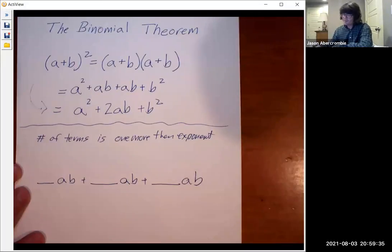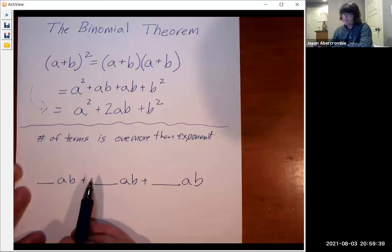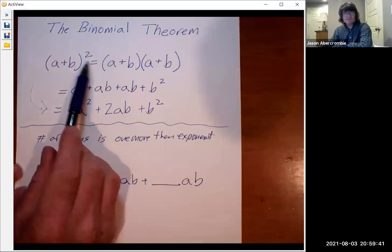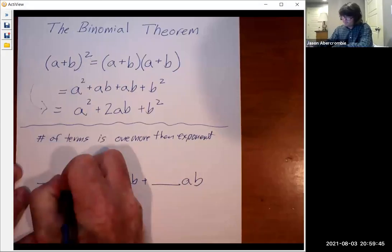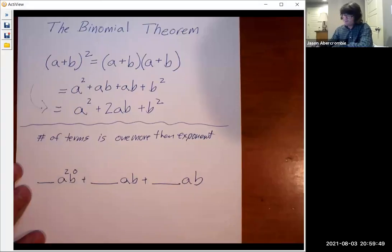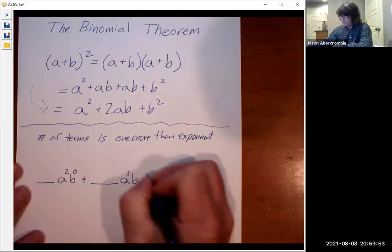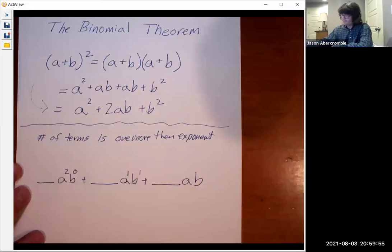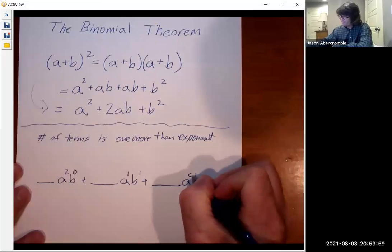And so now we've got to put powers on these a's and b's. And keep in mind, the powers always have to add up to this number, the two. So first of all, we're going to have a²b⁰. Those add up to two. And then the a goes down one and the b goes up one. So this is going to be a¹ and b¹. And this is going to be a⁰ and b².